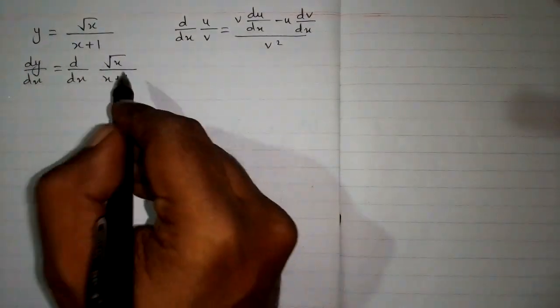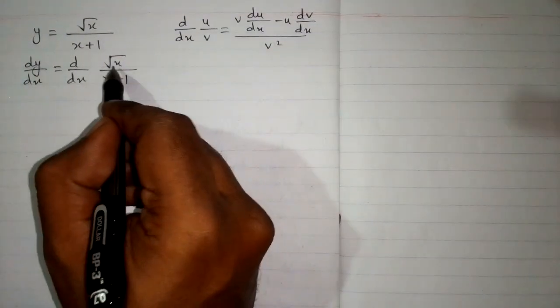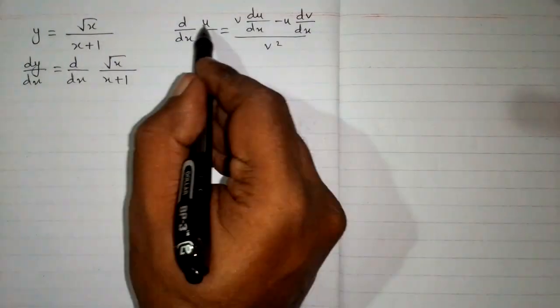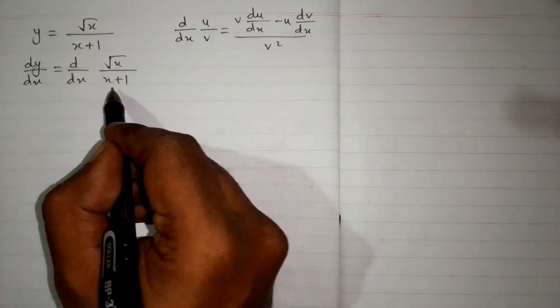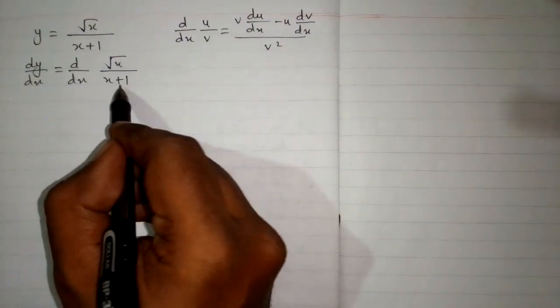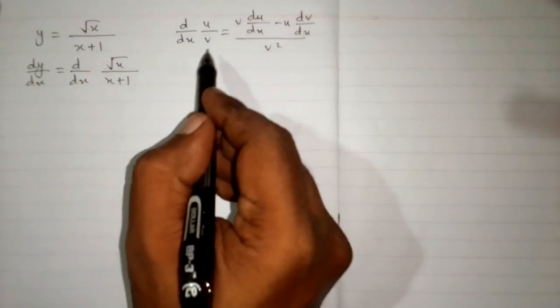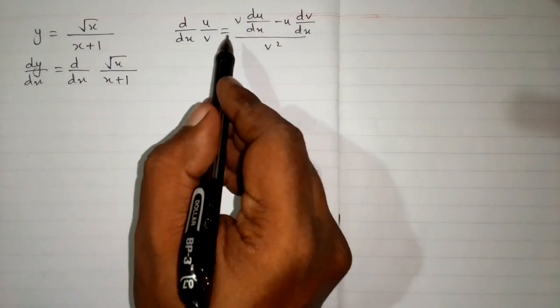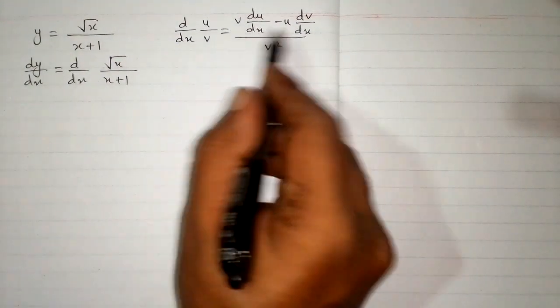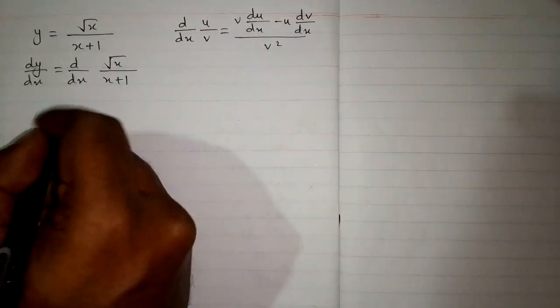Here we have the square root of x in place of u and x plus 1 in place of v. So we will put the values of u and v in this formula.